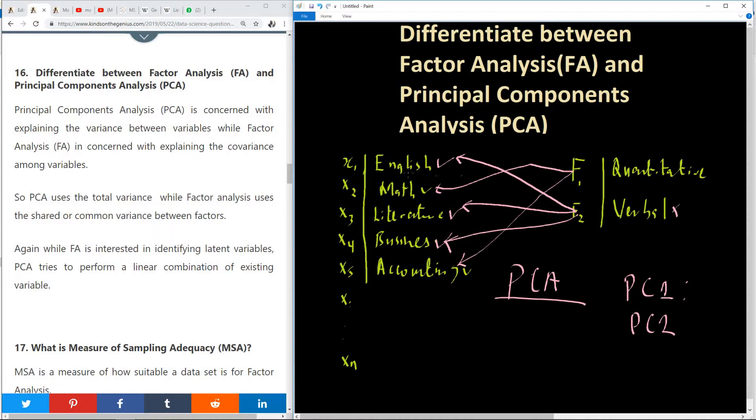So in this case, you're saying that the variation between English, literature, and business, we have very low variance between English, literature, and business. And also the variation between maths and accounting is also low. And when we come to variation between English and maths, it's very high. So we are trying to combine the covariance among variables. That is how we do in case of factor analysis.